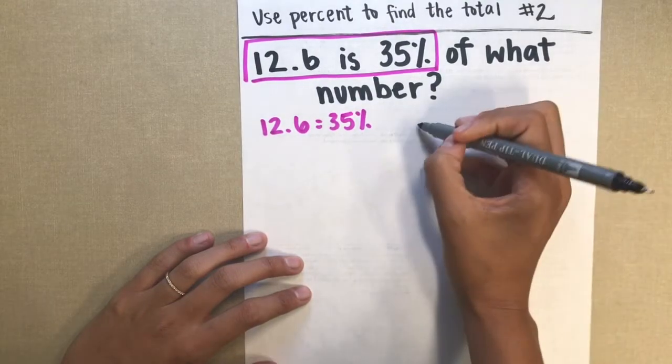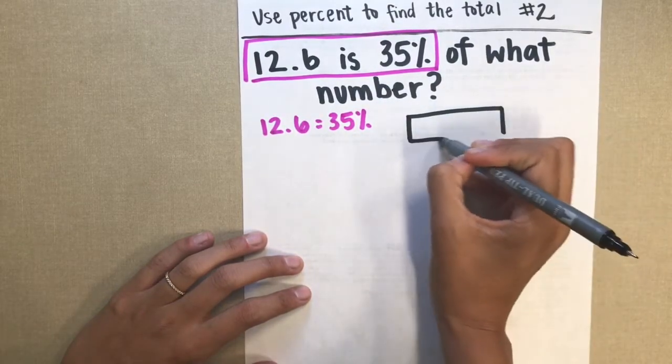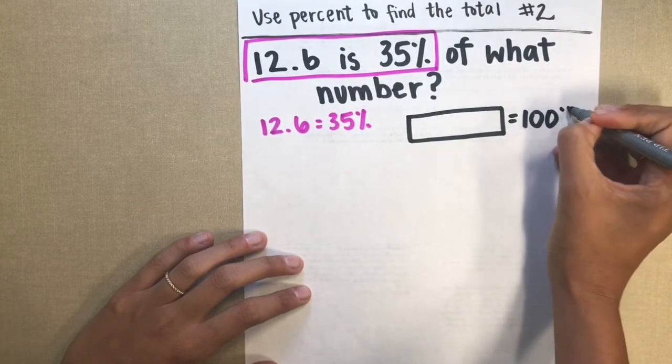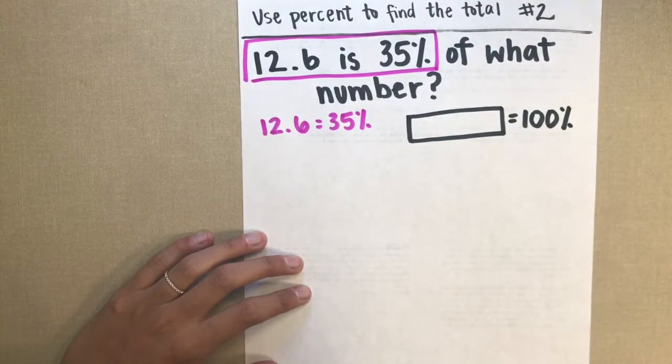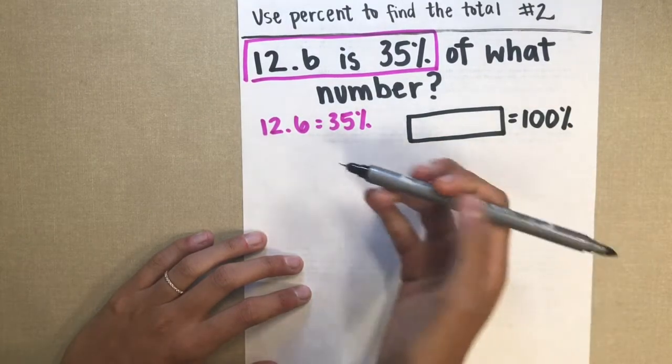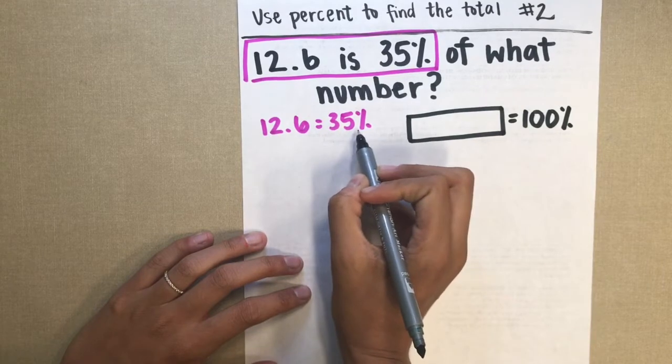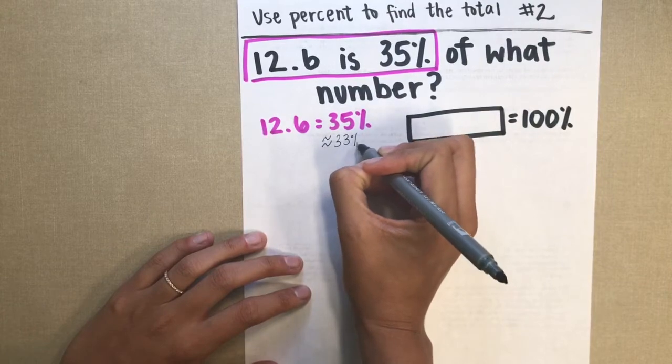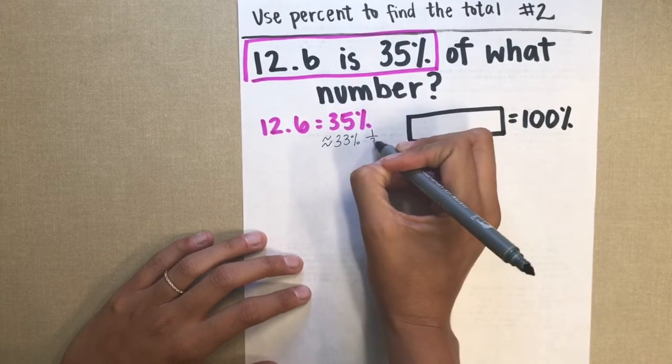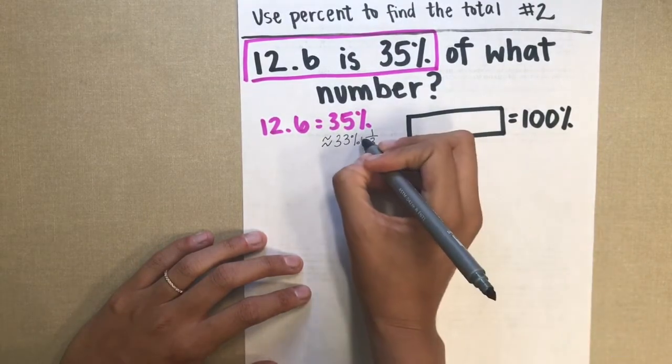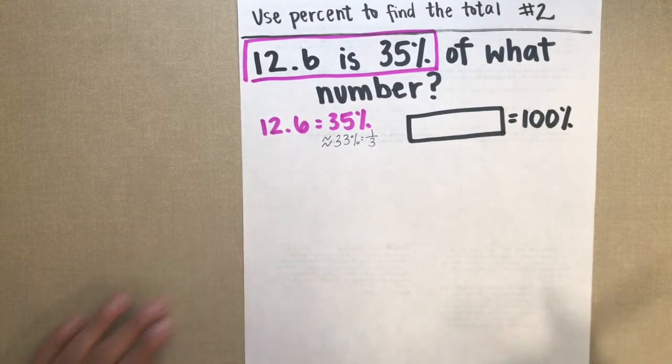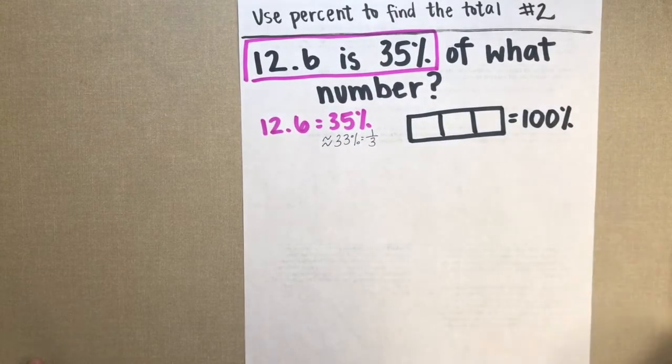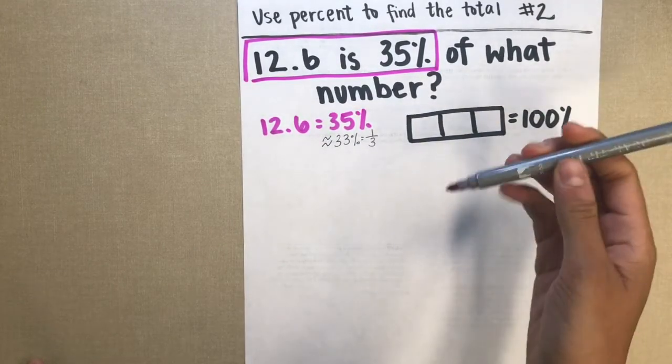So think of it like 100% of your candy bar. And you are looking for 35%. Well, I know that 35% is pretty close to 33%, which is the same thing as 1 third. So that means that 12.6 is about equal to 1 third of the total.